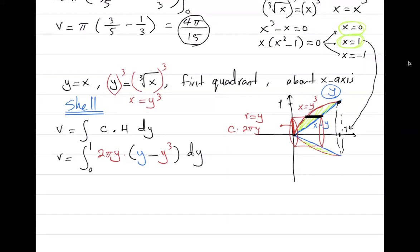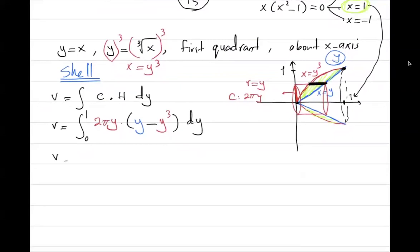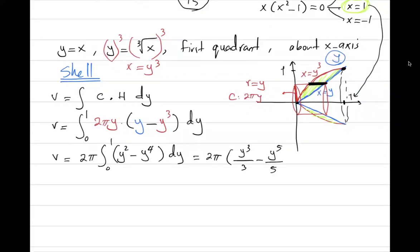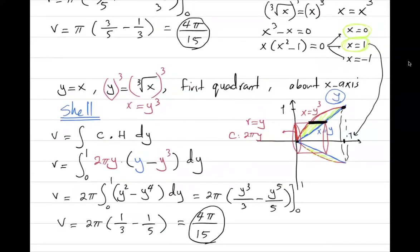The volume is 2π times the integral from 0 to 1 of y(y − y³) dy, which simplifies to 2π times the integral of (y² − y⁴) dy. The antiderivative is y³/3 minus y⁵/5, evaluated from 0 to 1. Plugging in 1 gives 1/3 − 1/5 = 2/15, multiplied by 2π gives 4π/15. Both the shell and washer methods give the exact same volume of 4π/15.